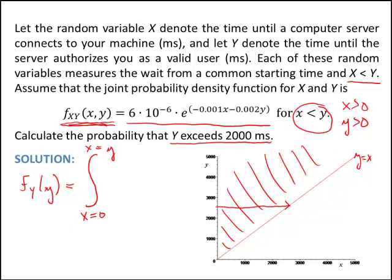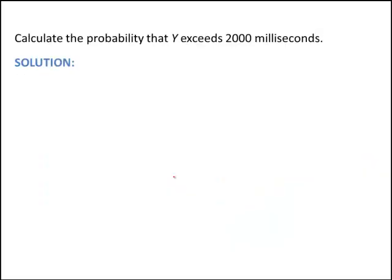So to find f of Y, I integrate in my X's. So for any Y, my X's go from 0 to Y, and then I integrate the joint density function. So let me go ahead and write that in. And again, we're integrating in X's, so this is dx. So let me go ahead and take this over to the next slide so we have a little bit of room to do the integration.